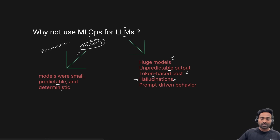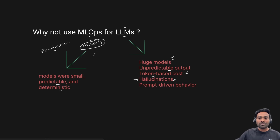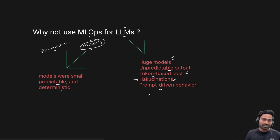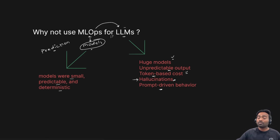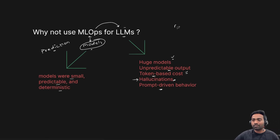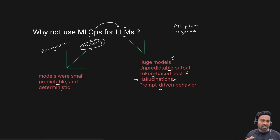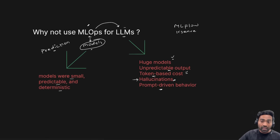This is not the case with MLOps — in traditional models there is no hallucination. Finally, in LLMOps everything is prompt driven, which is not the case with traditional models. This is why MLOps cannot be applied for large language models. But one important thing to note: most MLOps tools today — it can be MLflow, it can be KServe, it can be Amazon SageMaker — they can all help you with LLMOps as well. So if you know MLOps, it's a great advantage when learning LLMOps.